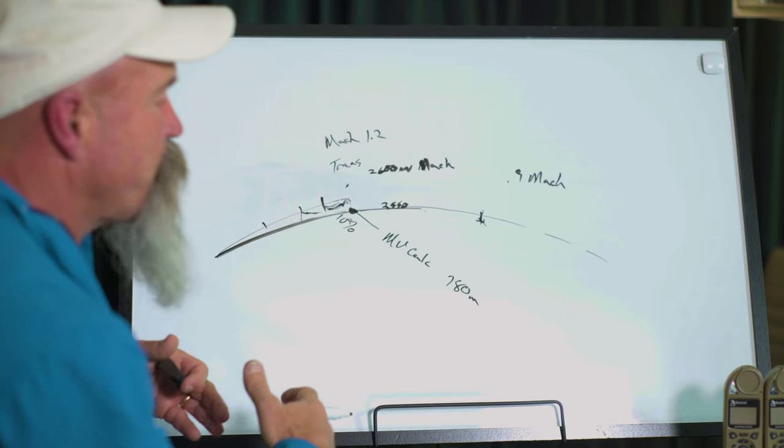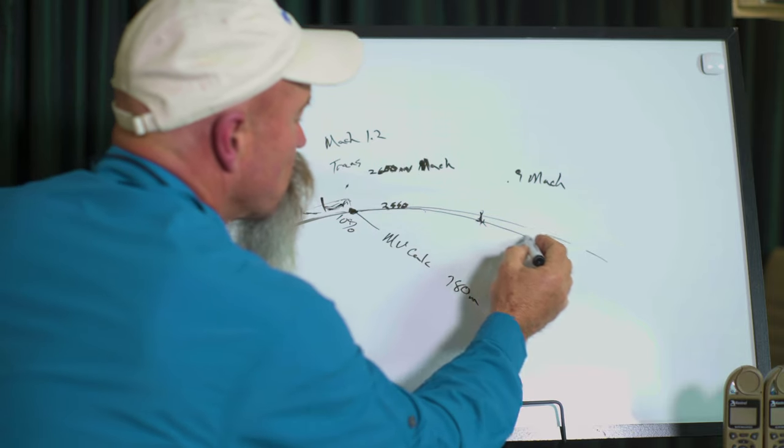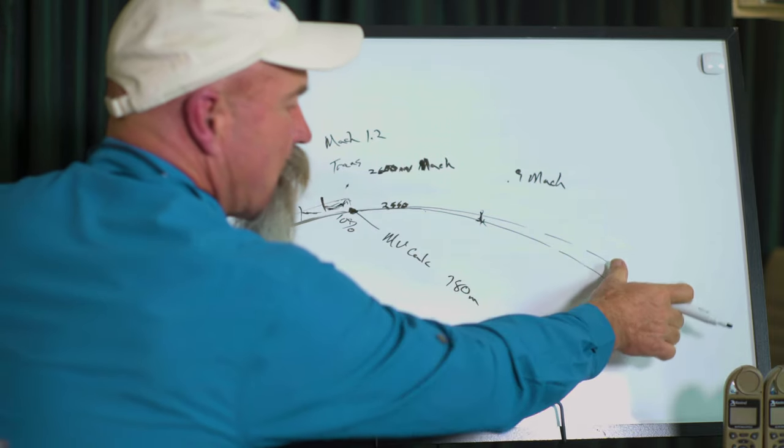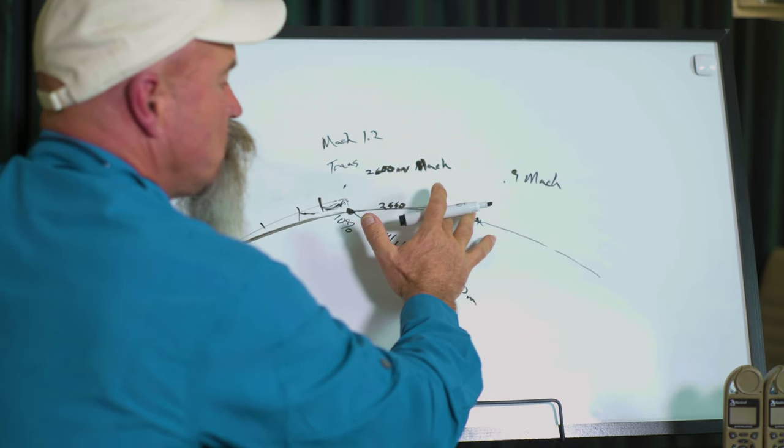It's not imparting enough spin stability on the bullet, so we might actually see the bullets starting to come down here. It's taking this line again and bringing it down to here, so this prediction changes.